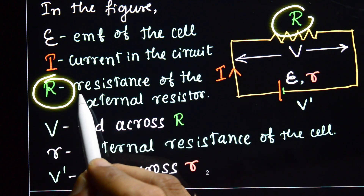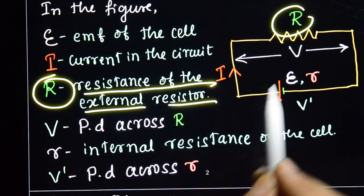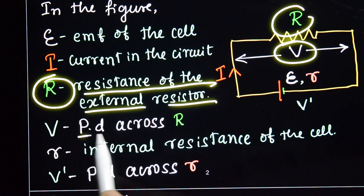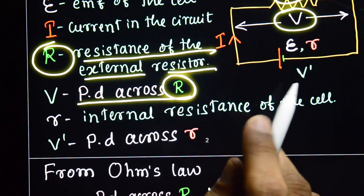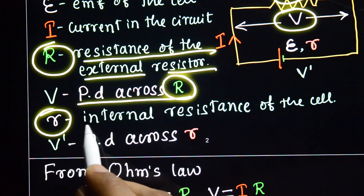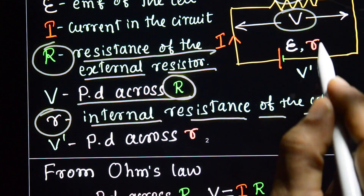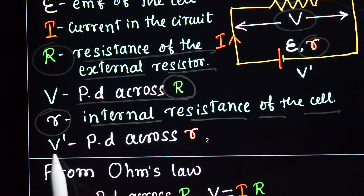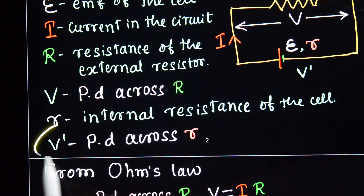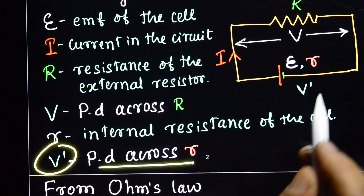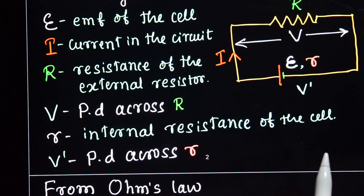Capital R is the resistance of the external resistor. V is the potential difference across the external resistor R. Small r is the internal resistance of the cell. V dash is the potential difference across the internal resistor r.